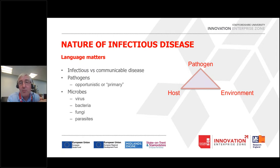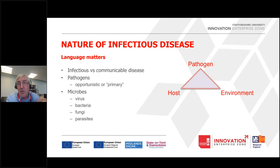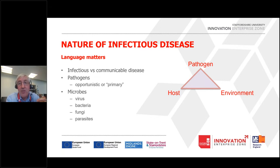When we talk about pathogens, they can be separated into primary pathogens and opportunistic pathogens. Primary pathogens will cause disease in anyone infected by them, whereas an opportunistic pathogen can, under certain circumstances, cause disease. So let's make sure we're all aware that when talking about pathogens, we are talking about a range of different microorganisms.